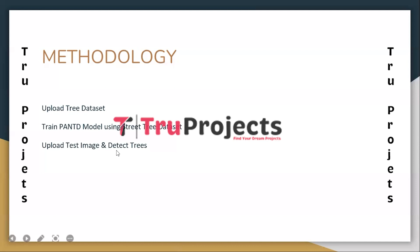The final module is Upload Test Image and Detect Trees. In this module, a test image is uploaded to the application. The PA and TD model is applied to the test image to detect the presence of trees and classify them based on their type. The model leverages its learned features and adaptive brightness enhancement to handle challenging scenarios such as low resolution or dark images, as well as cases where trees may be partially hidden or occluded by other objects.